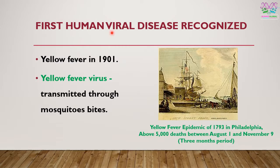The first human viral disease was recognized in the year 1901 — yellow fever, caused by the yellow fever virus. This virus is transmitted through mosquito bites; we now know several other viral diseases are also transmitted through mosquitoes, with dengue being a common one. Historical records of yellow fever infections are also available from 1793 in Philadelphia, when almost 5,000 deaths took place in just three months.